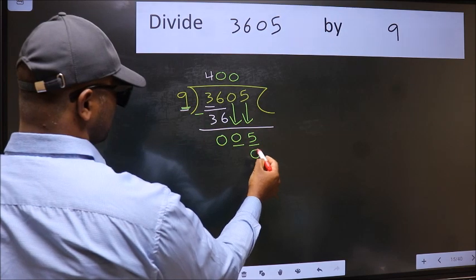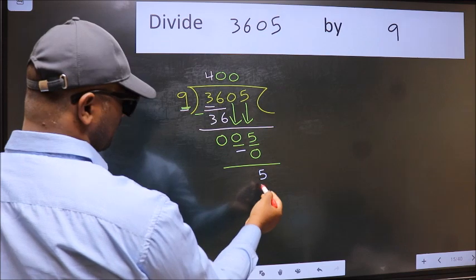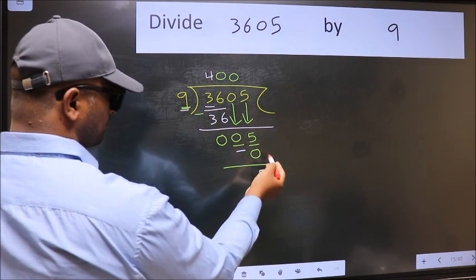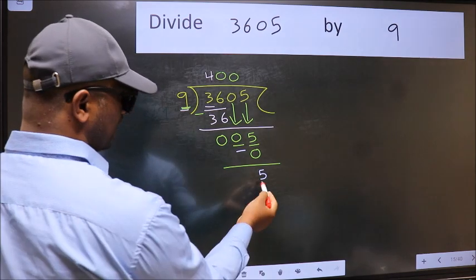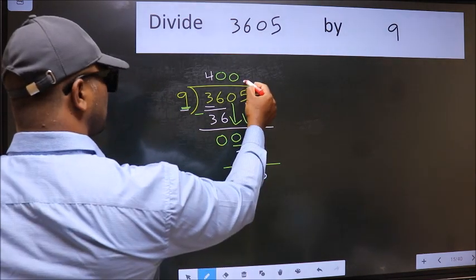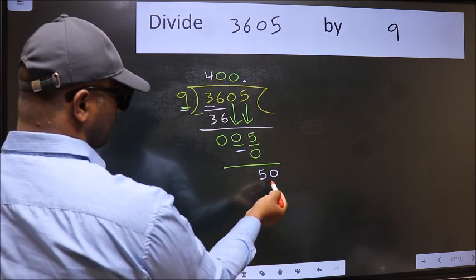Now we should subtract, we get 5. Over here we did not bring any number down, and 5 is smaller than 9. So now we can put dot and take 0. So 50, a number close to 50 in 9 table is 9 times 5, 45.